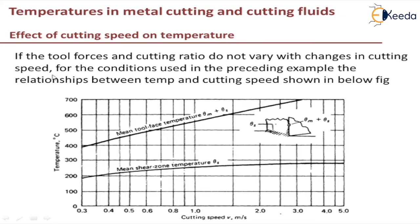— that is, the tool forces and cutting ratio are kept constant — for the conditions used in the preceding example, the relationship between temperature and cutting speed is shown in the figure below. As you can see, the mean temperature at the shear zone, theta-s, is increasing as the cutting speed increases.